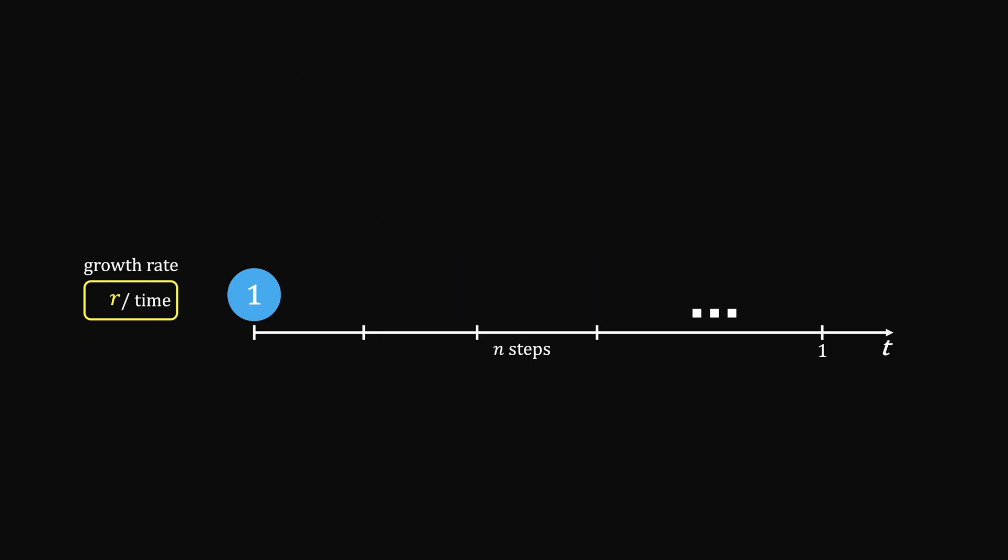Now, let's start with the case where the growth rate is 2 units per unit time. What would it become when unit time later? If we follow the definition of natural growth, then we should divide the growth over n intervals. Each interval grows by 1 plus 2 over n.